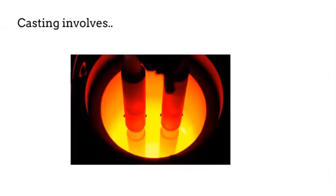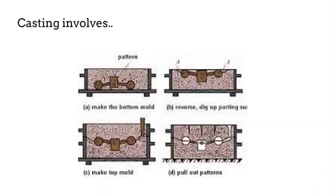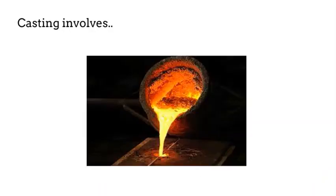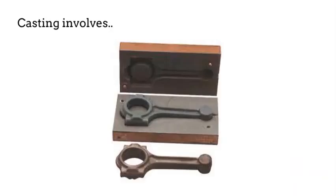So casting involves: 1. Heating of metal until it liquefies in a furnace. 2. Preparation of a mold box. 3. Pouring of liquid metal into the mold box. 4. Removing the final casting after solidification.